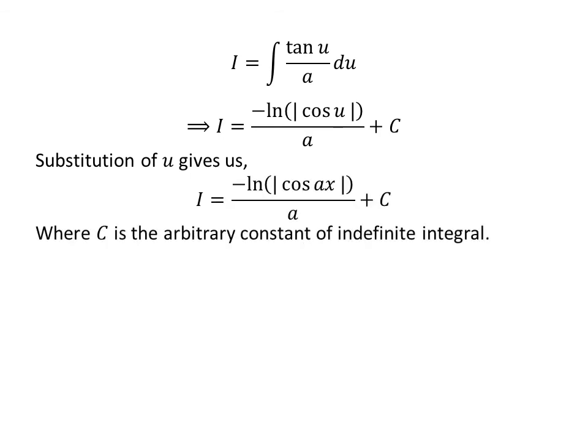We have solved the integration in terms of u. Now, we need to take back the expression in terms of x. For that, I have replaced u by a times x which we had assumed earlier. So, i is equal to minus natural log of absolute value of cosine of a times x upon a plus capital C.